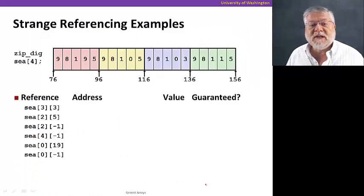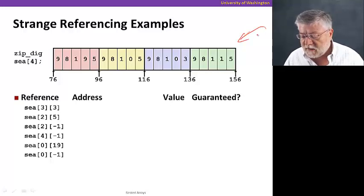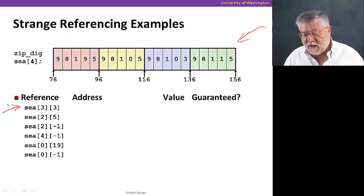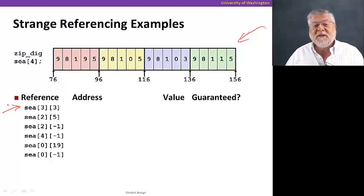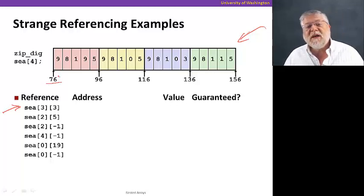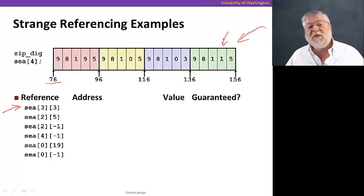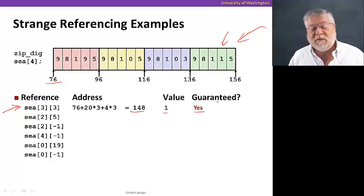Let's close with some addressing examples for different accesses to our array, shown as it's represented in memory as a contiguous block. For access SEA[3][3]: we multiply the first index by 20, giving 3×20=60, and the second index by 4, giving 3×4=12, for a total offset of 72. Adding the starting address of 76 puts us at address 148. The value at that element is 1. Remember, it's the fourth row and fourth element because indices start at zero. The address is 148, the value is 1, and this is guaranteed because of row-major order.